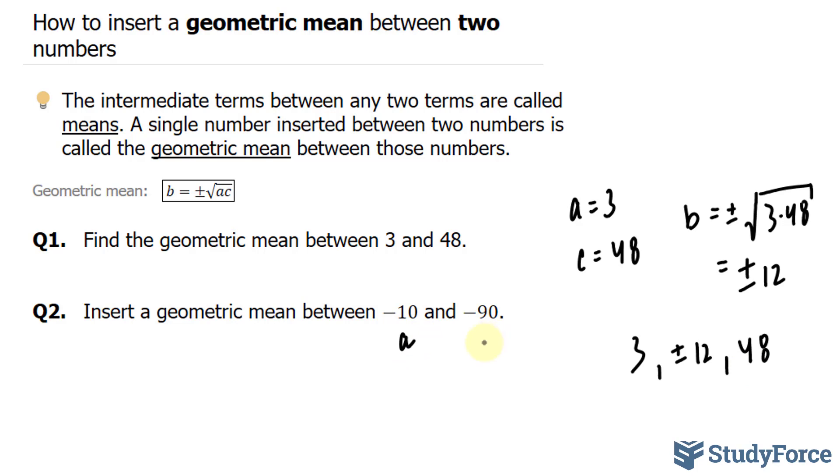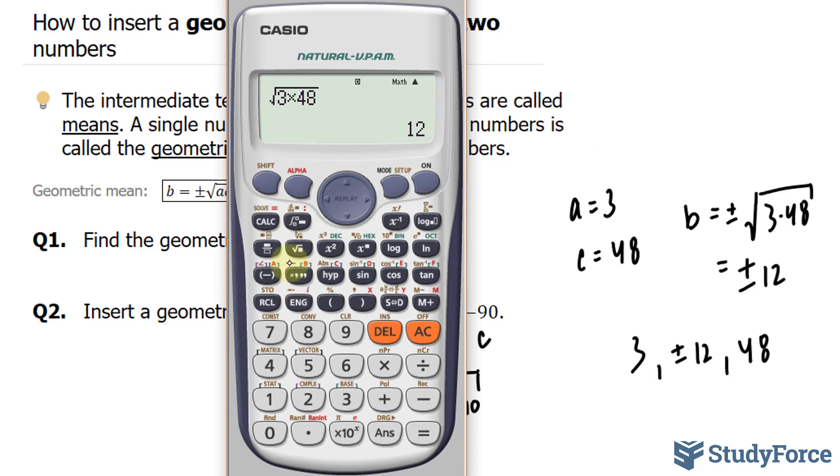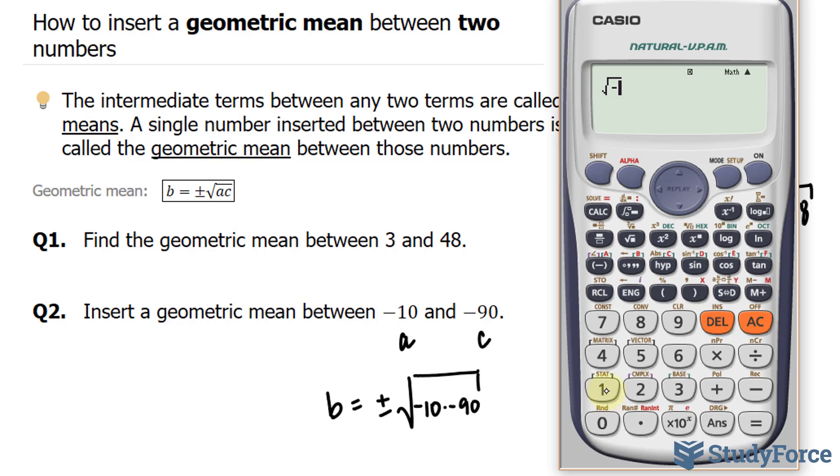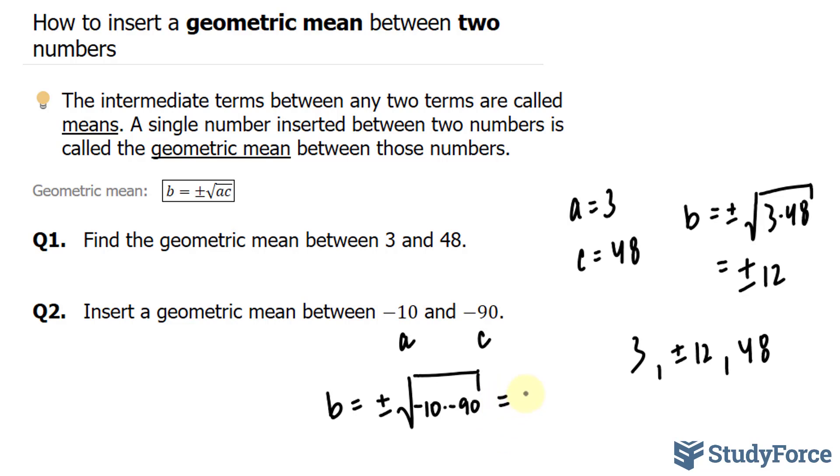This will serve as our A, this as our C. B is equal to plus minus the square root of negative 10 times negative 90. Using our calculator, the square root of negative 10 times negative 90 gives us 30. So B is equal to plus minus 30. And so our answer is negative 10, plus minus 30, and negative 90.